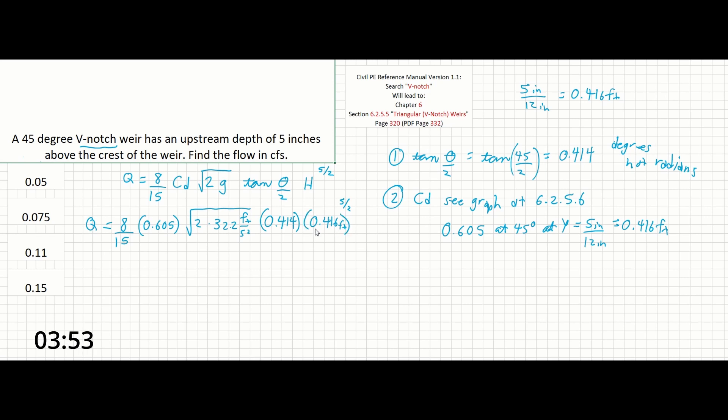So we can see here that actually feet to the 5 over 2 times the square root of feet per second squared after this gets simplified will give us cubic feet per second which is just good to double check.